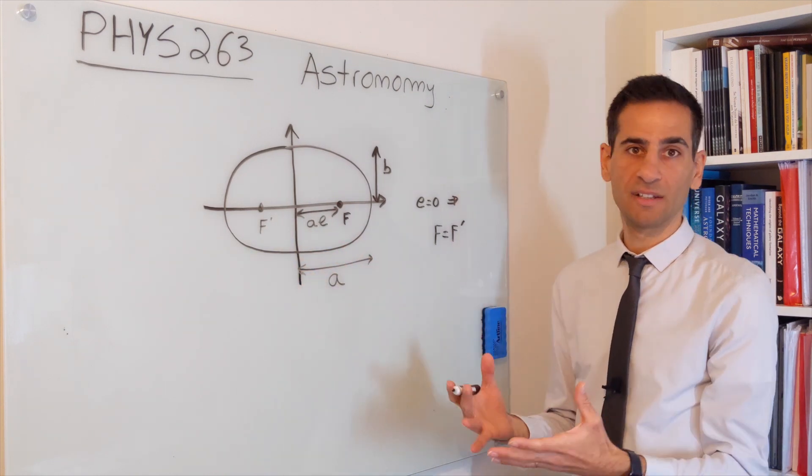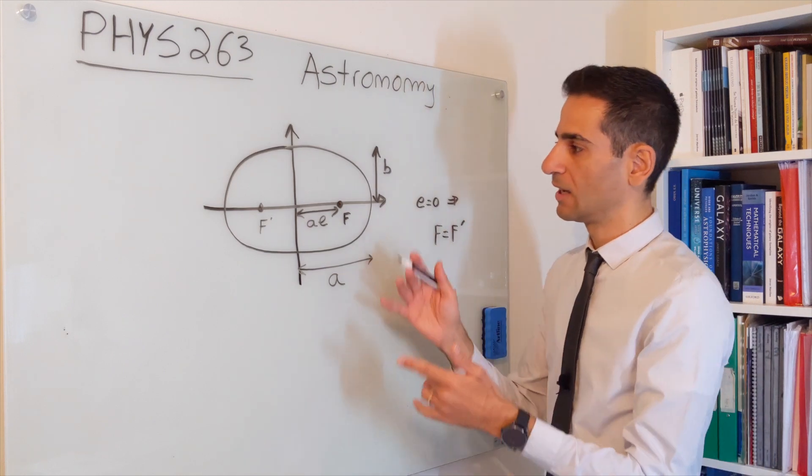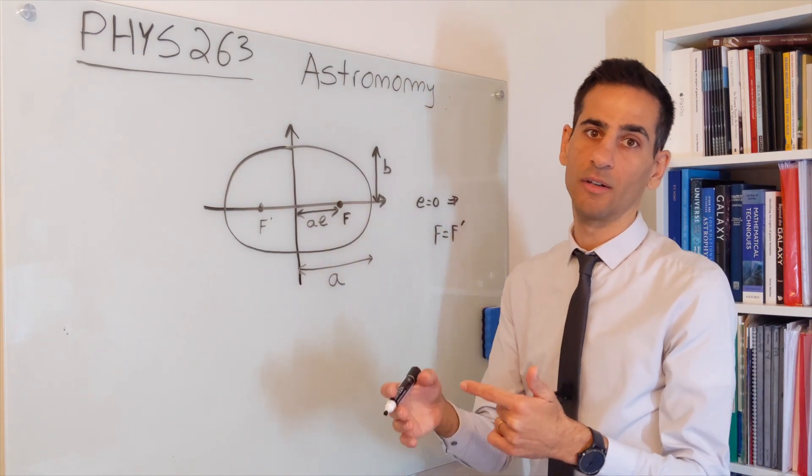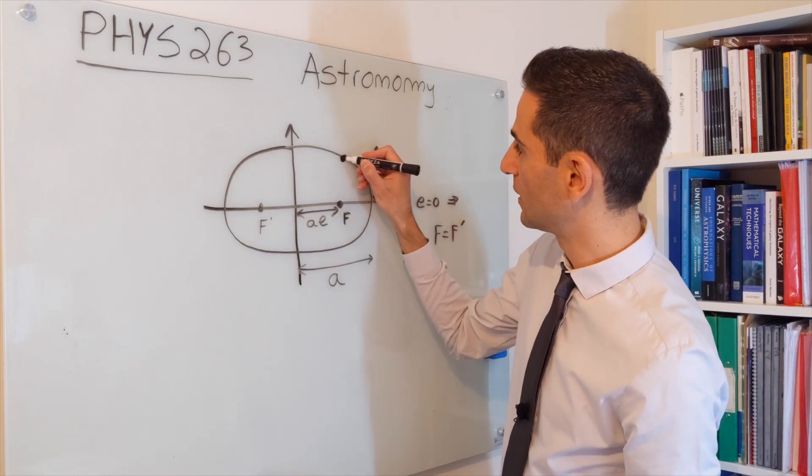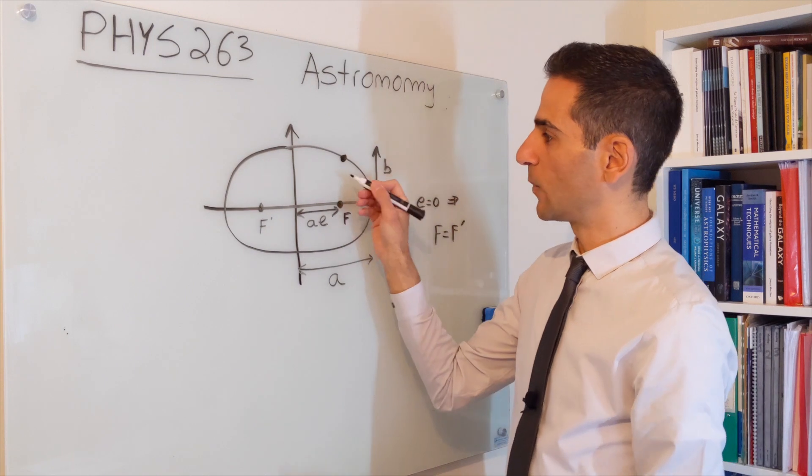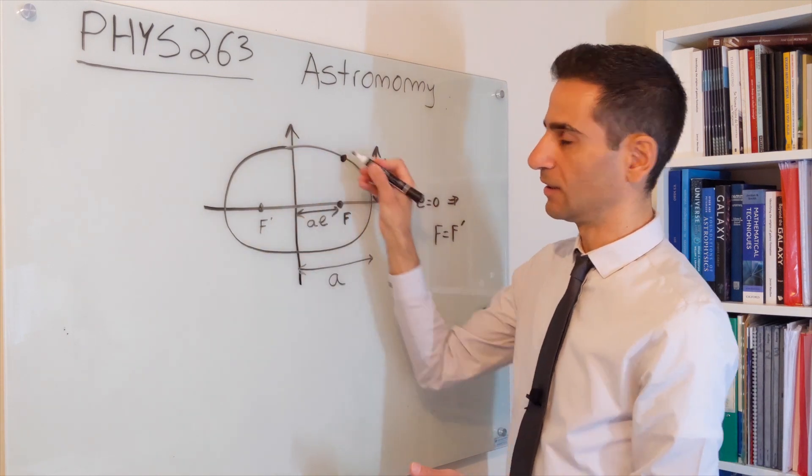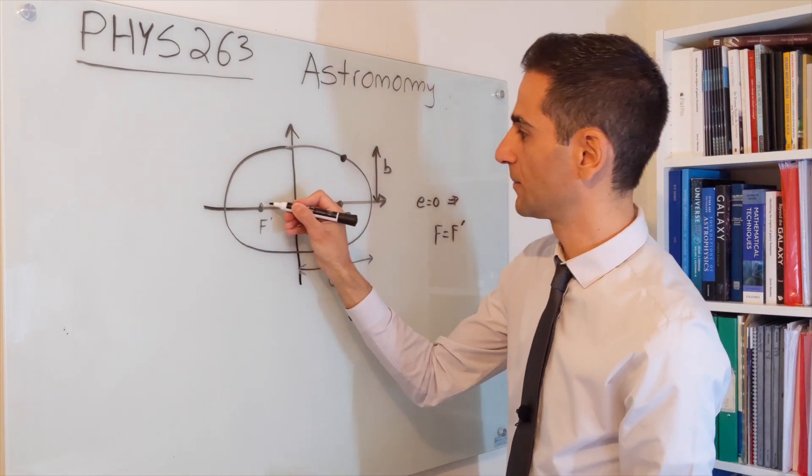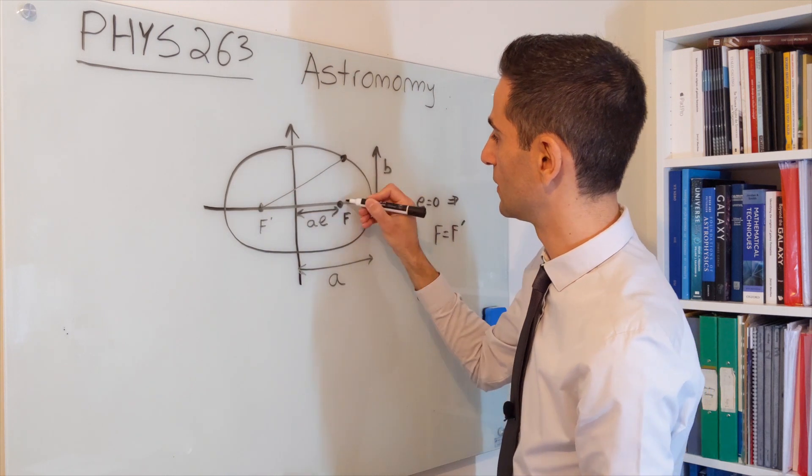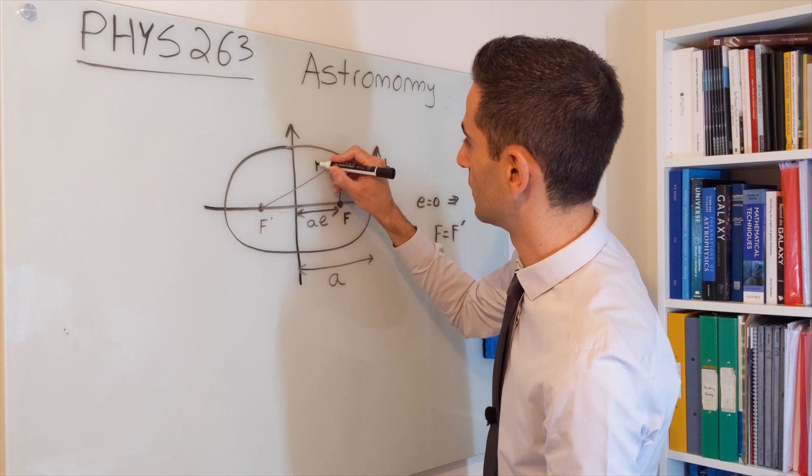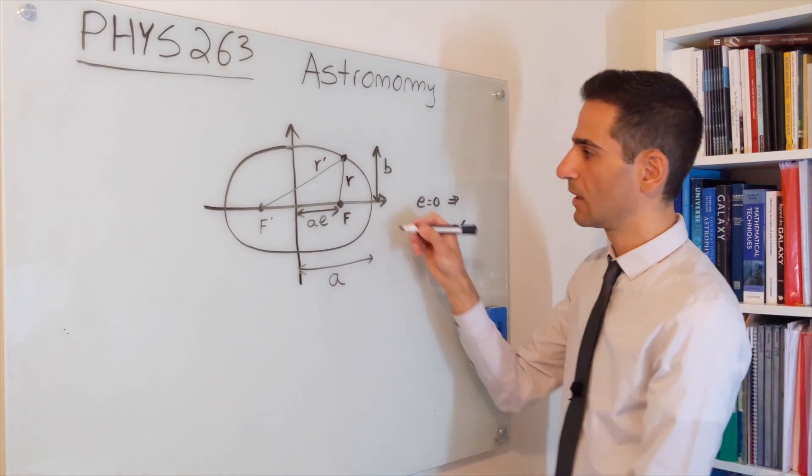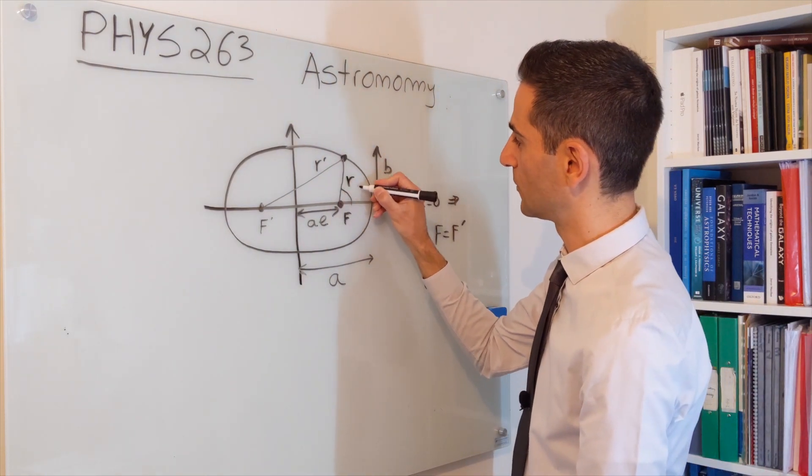The other thing that's important to understand—and this will come in handy later on when we actually define coordinates—let's say this point over here. The way that you can draw an ellipse very easily is if you define these two distances, calling this r and this r prime.